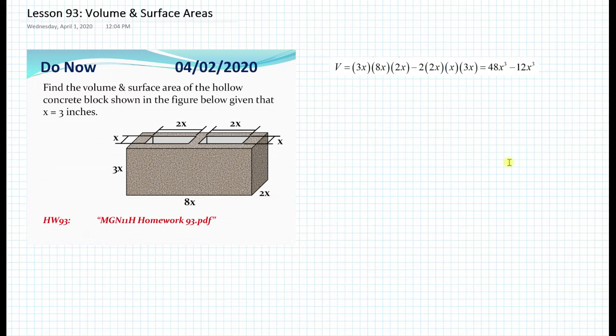But if we want to subtract the empty spaces inside, we just do 2 times 2x times x times 3x. Why is it times 2 over here? Well, because we have 2 empty spaces or the hollows in this case.